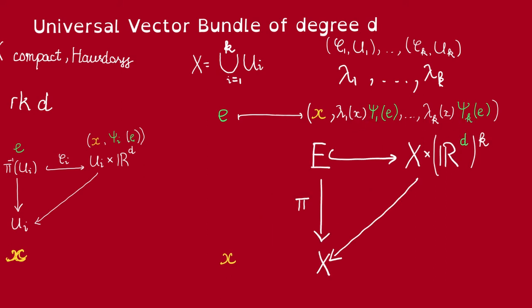Now we also immediately see that this map is injective because if we have e' and e lying over two different points, x' and x, then the first coordinate is going to distinguish them. If they lie over the same point, then we know one of these lambda_i is going to be non-zero. So if we look at the i-th coordinate, we have psi_i is local coordinate on this fiber. So psi_i of e' and psi of e must be different. So the i-th coordinate is going to distinguish them.